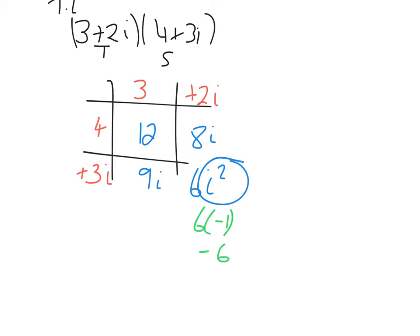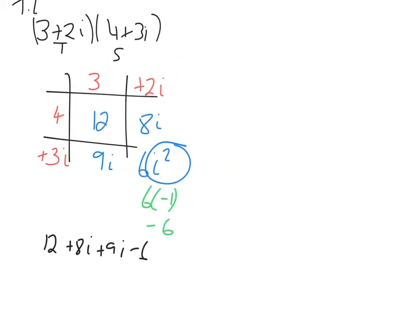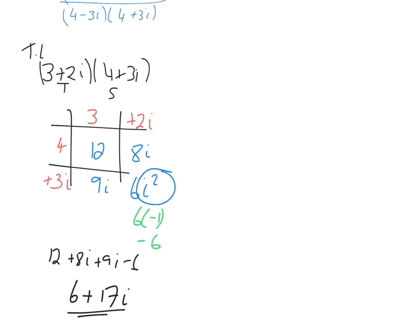Bringing everything in the top bracket together: 12 plus 8i plus 9i minus 6, which tidies up to give 6 plus 17i. That's the top line result, and now I'll do the same with the bottom line.